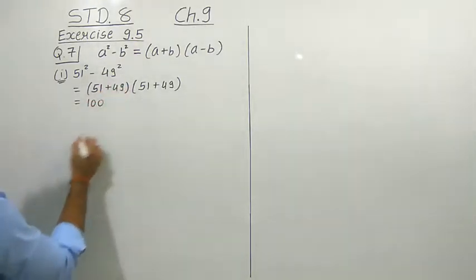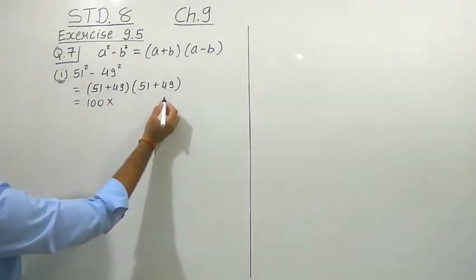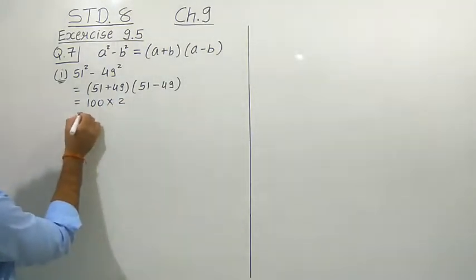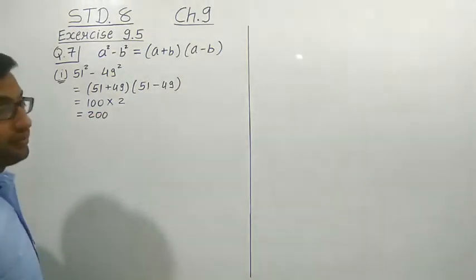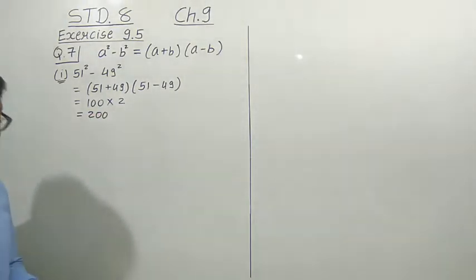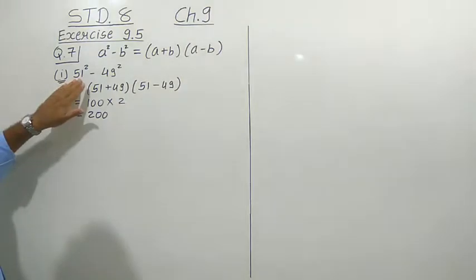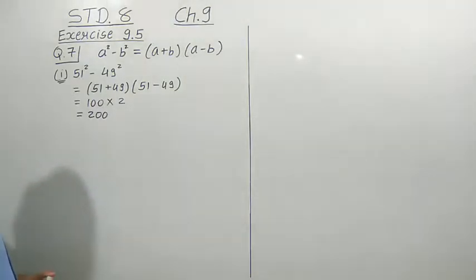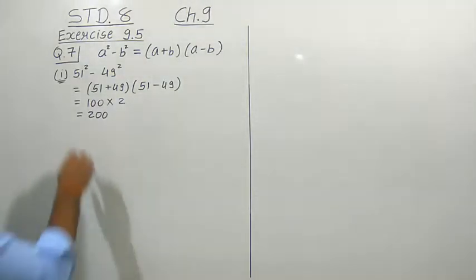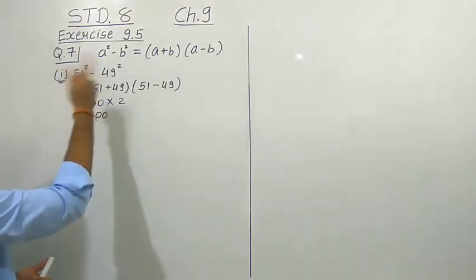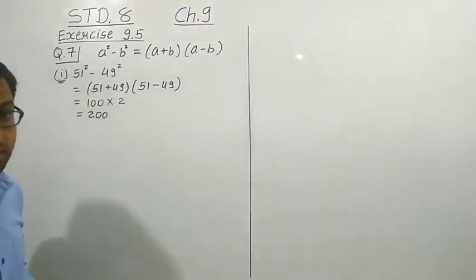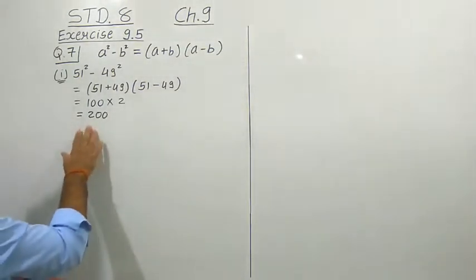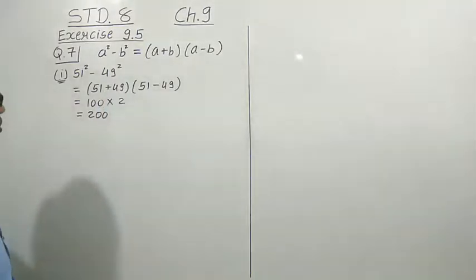Here we get 100, and in the subtraction we get 2. So the answer is 200. Using this identity, it is very easy to calculate the subtraction of squares of two numbers. If we found the square of 51, then the square of 49 and subtracted, it would be a very tedious process. But using this identity, we can easily solve this question.